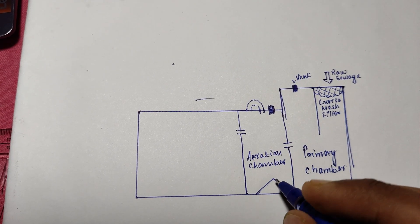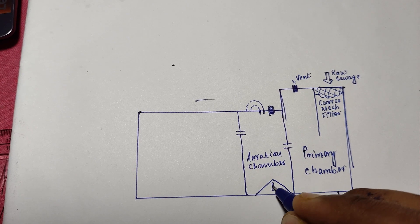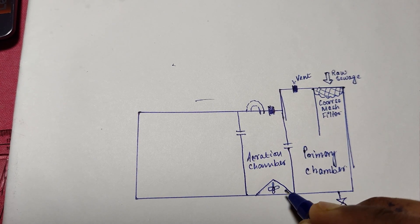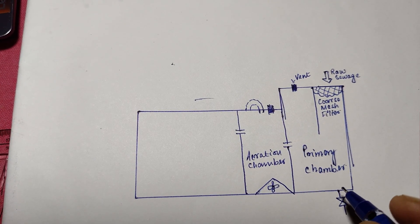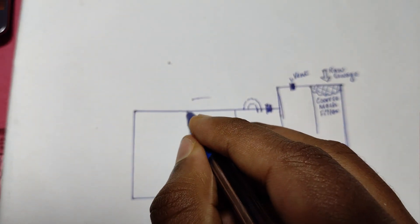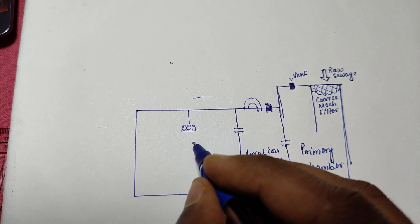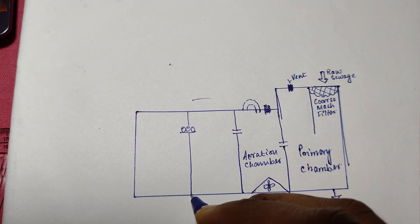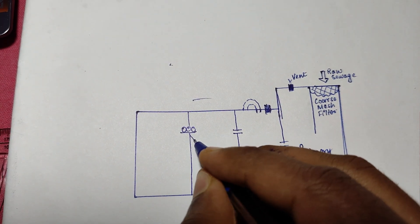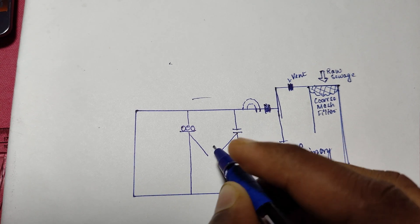The air blowers, which are mounted outside the unit, oxygenate and stir the effluent bacteria mix. You can think of it as a lively underwater dance party where bacteria are enjoying their feast. The sewage marinates